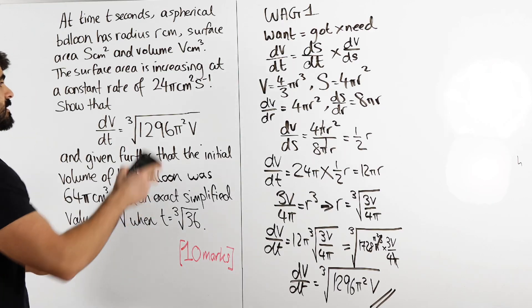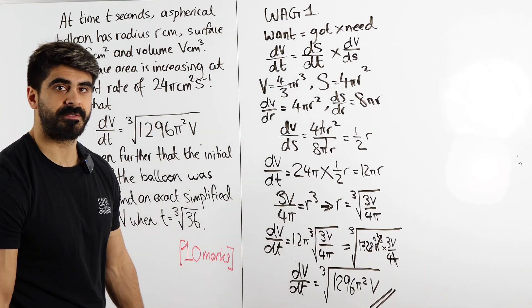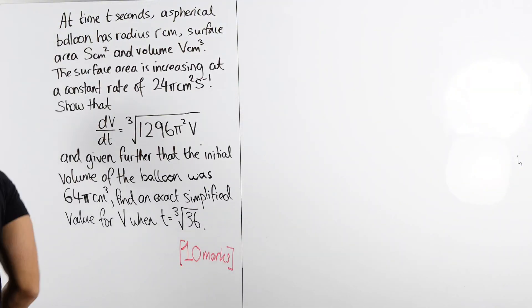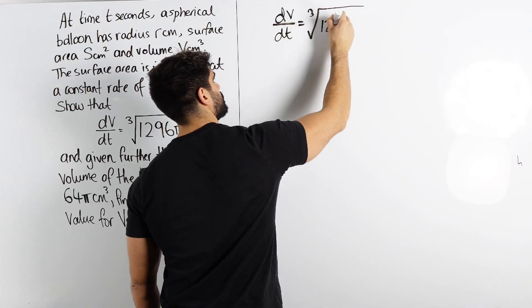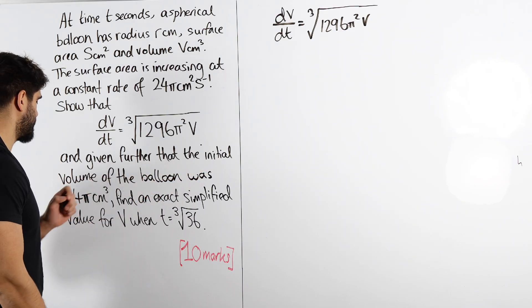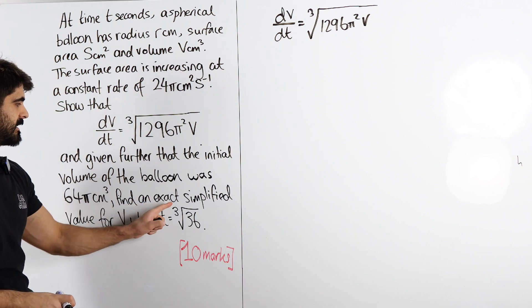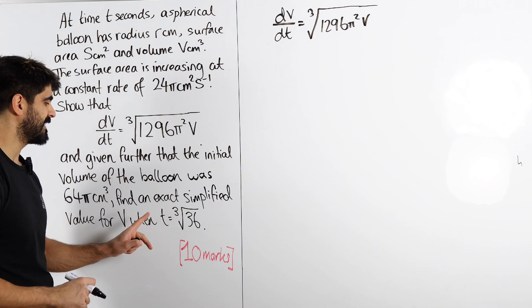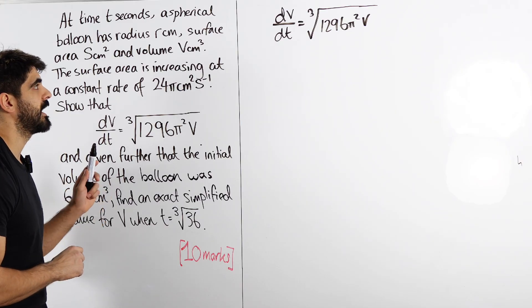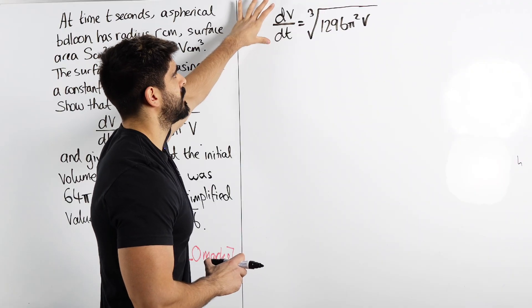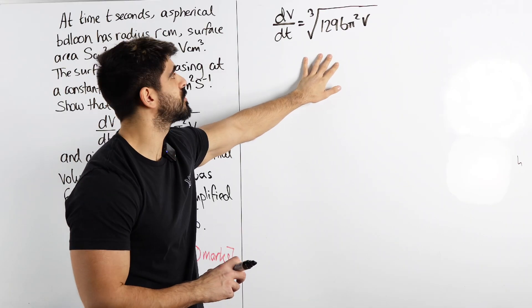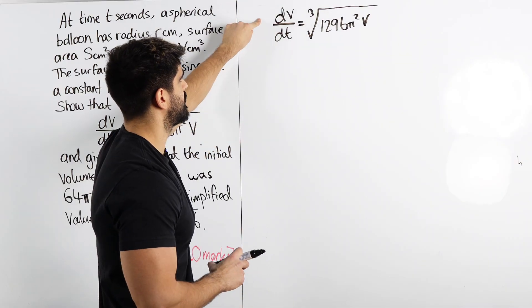So what I'm very going to quickly do is I'm going to just clear this, and then we're going to go ahead and solve this. Right, we have this. We are given further that the initial volume of the balloon was 64π centimeters cubed. Find an exact simplified value for v when t is the cube root of 36. So somehow we need to find a formula that connects the volume and time. And we can do that with this, because we have volume and time. We just need to integrate this to get an equation that connects v and t. This is separation of variables. We somehow need to get all the v's to the left side, and all the t's can go over there.